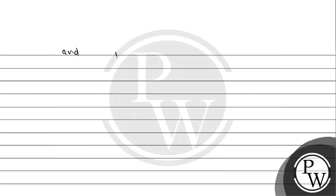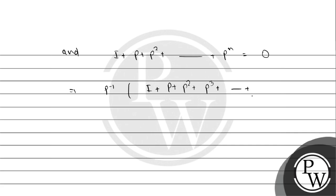And here, I plus P plus P squared plus ... plus P to the power n equals 0. What do we do? We will operate with P inverse. Multiply both sides by P inverse: (I plus P plus P squared plus ... plus P to the power n) times P inverse equals 0 times P inverse, which equals the null matrix.